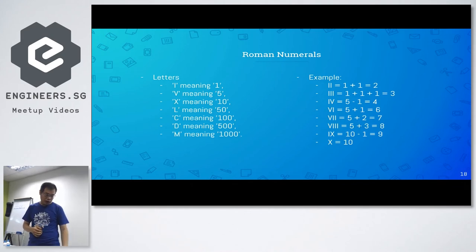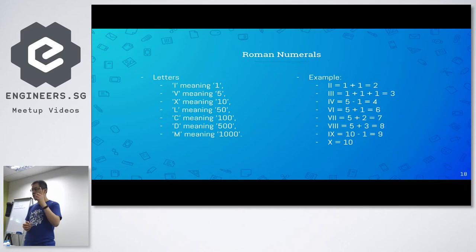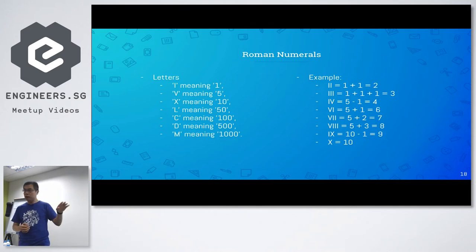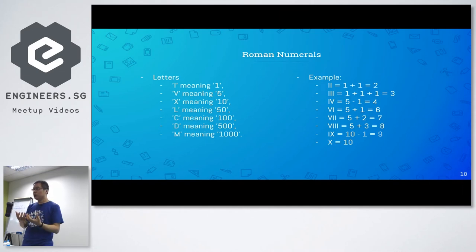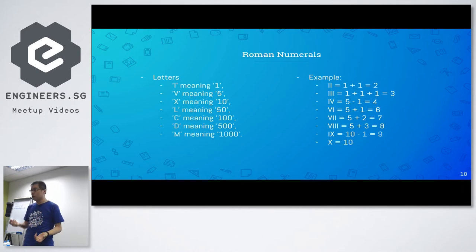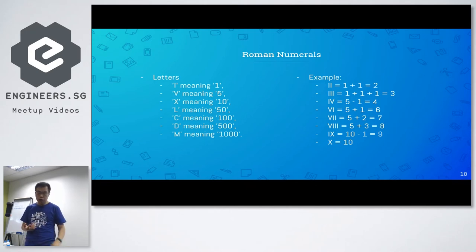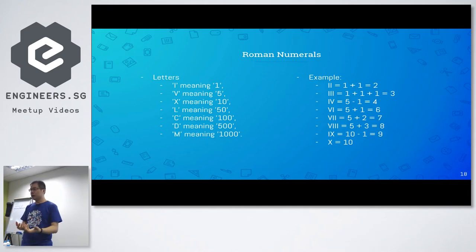Firstly, there are letters with meanings. Like I stands for one, V stands for five, and X stands for ten. There are a bunch of letters, and each letter corresponds to one value. Once you have those letters, you can combine them to make bigger numbers. For example, if you want to say two — two means one plus one, so you have an I followed by another I, put them together, that means two. Three is also simple: three means one plus one plus one, so you just need three I's.